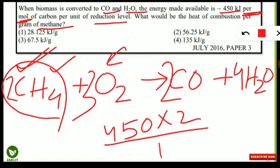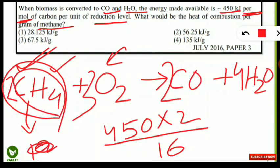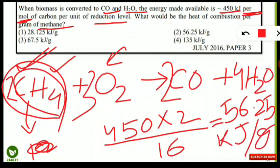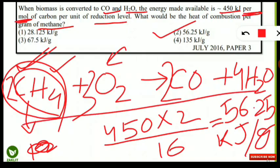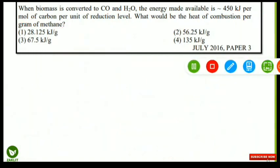Now we divide by the molecular weight of methane to get heat per gram. Methane (CH₄): carbon = 12, hydrogen = 1 × 4 = 4, so molecular weight = 16 g/mol. Therefore: 900 ÷ 16 = 56.25 kJ/g. So option 2 is correct. The approach is: multiply energy per mole by moles in balanced equation, then divide by molecular weight.